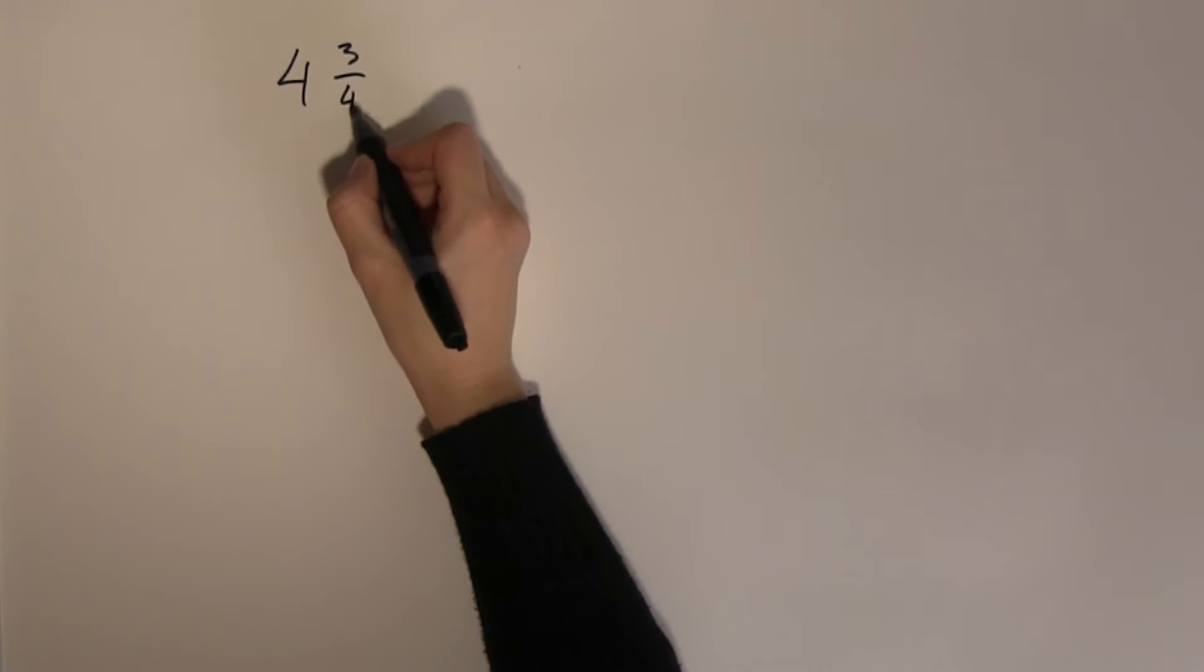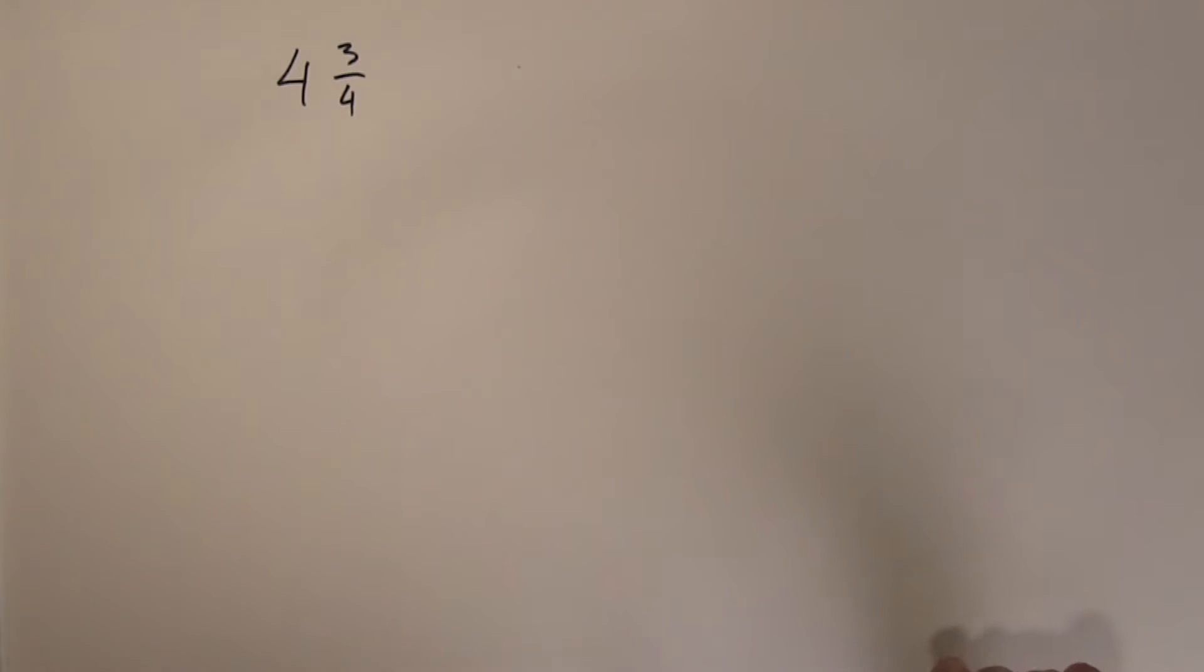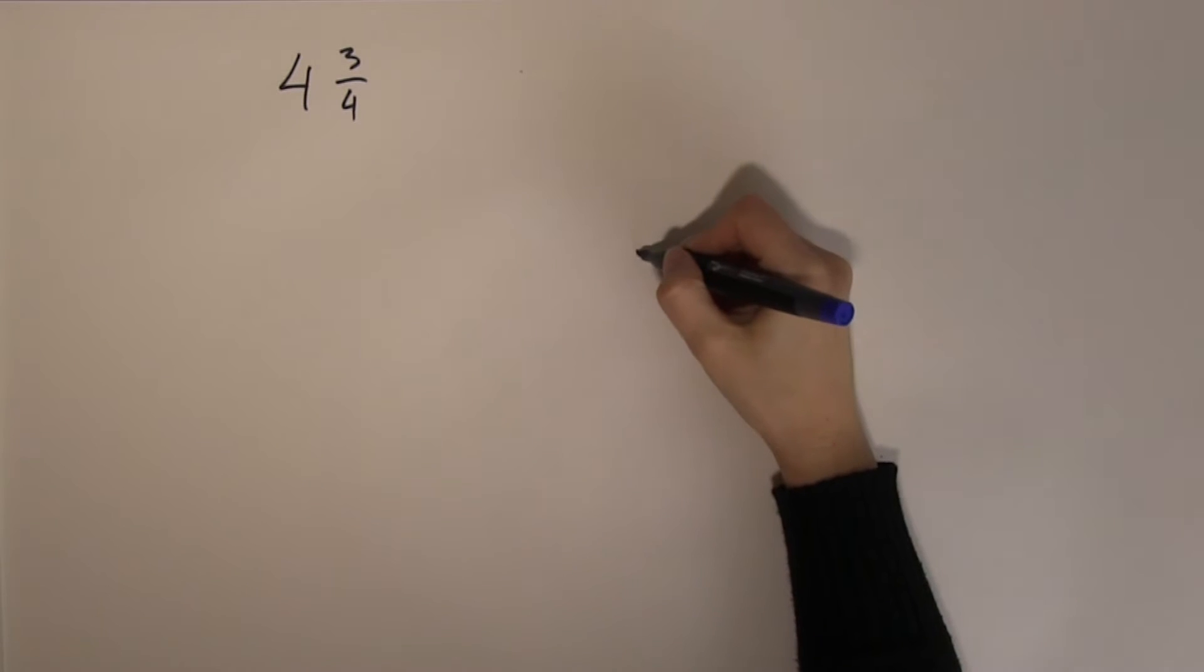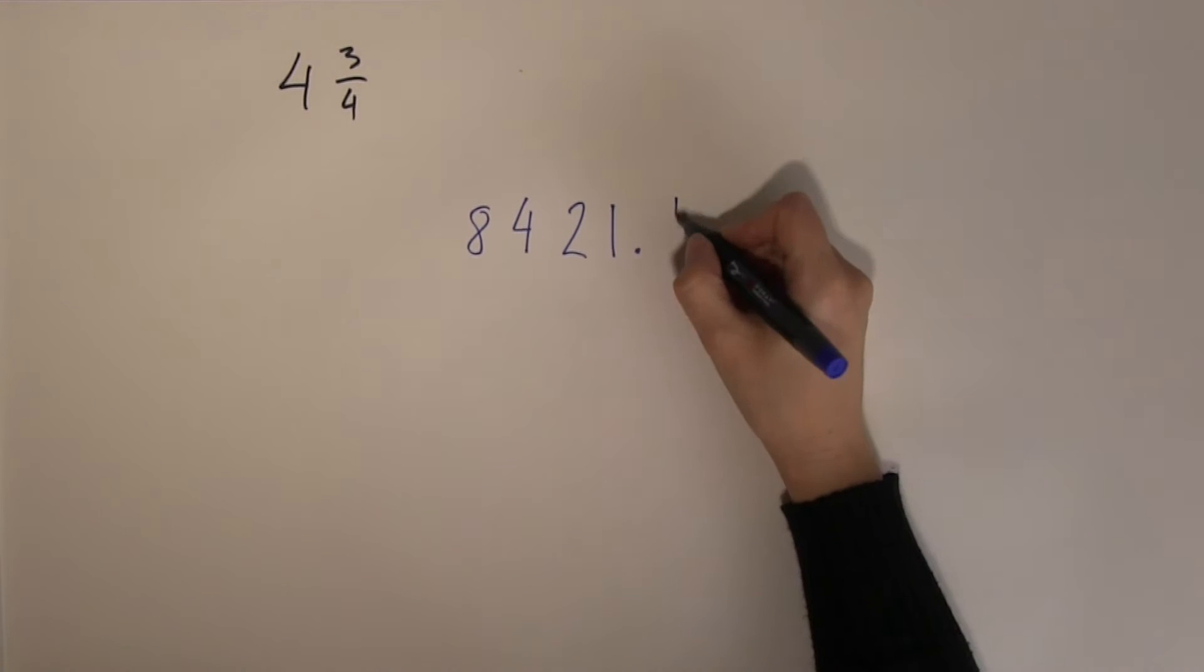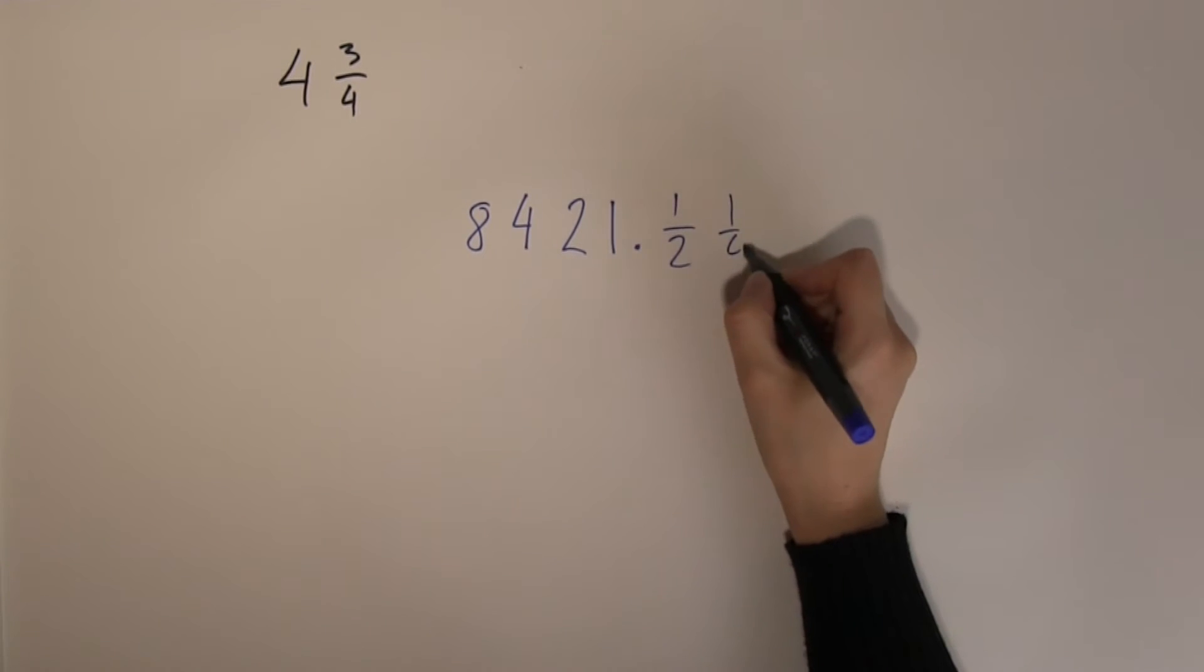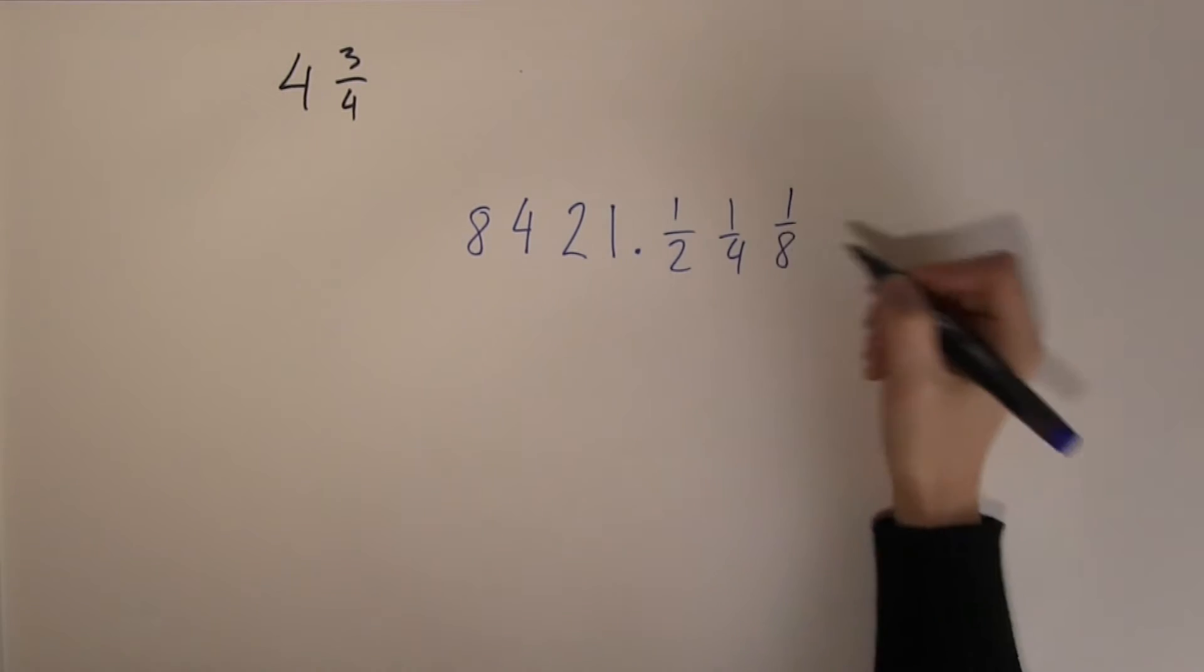So let's say I have a fraction, say 4 and 3 quarters. How can I convert that into a binary fraction? Again, let's call upon the place value table. So the radix point is here: 1, 2, 4, 8, and on this side half, a quarter, and an eighth.